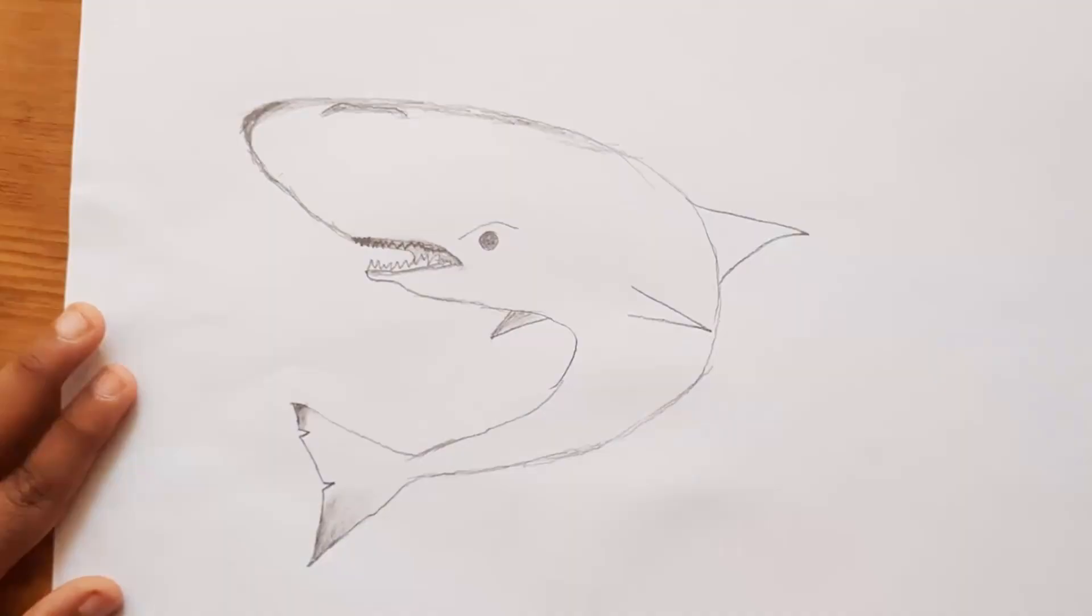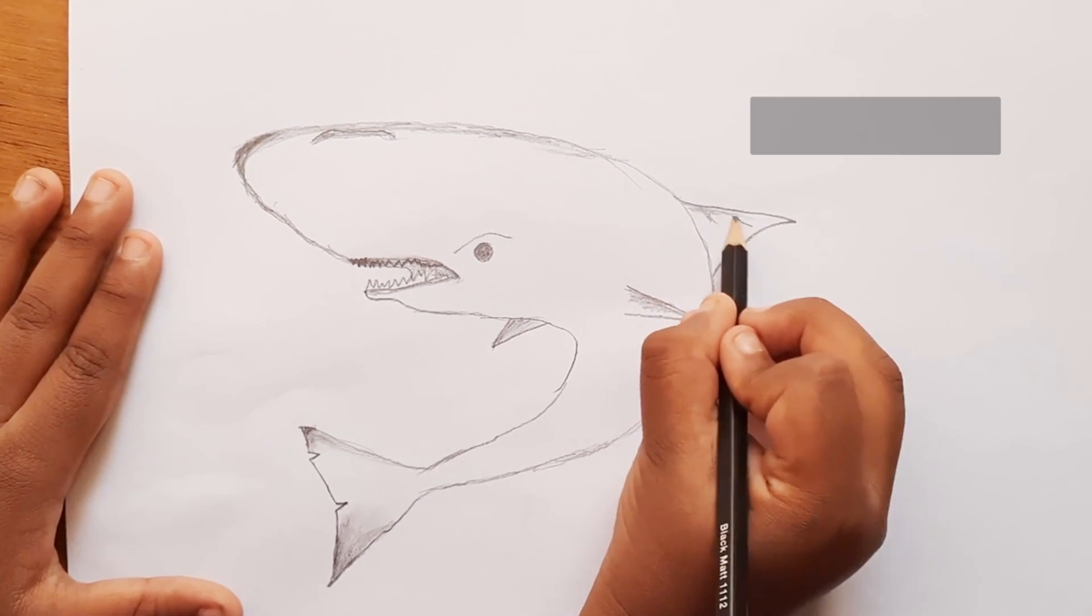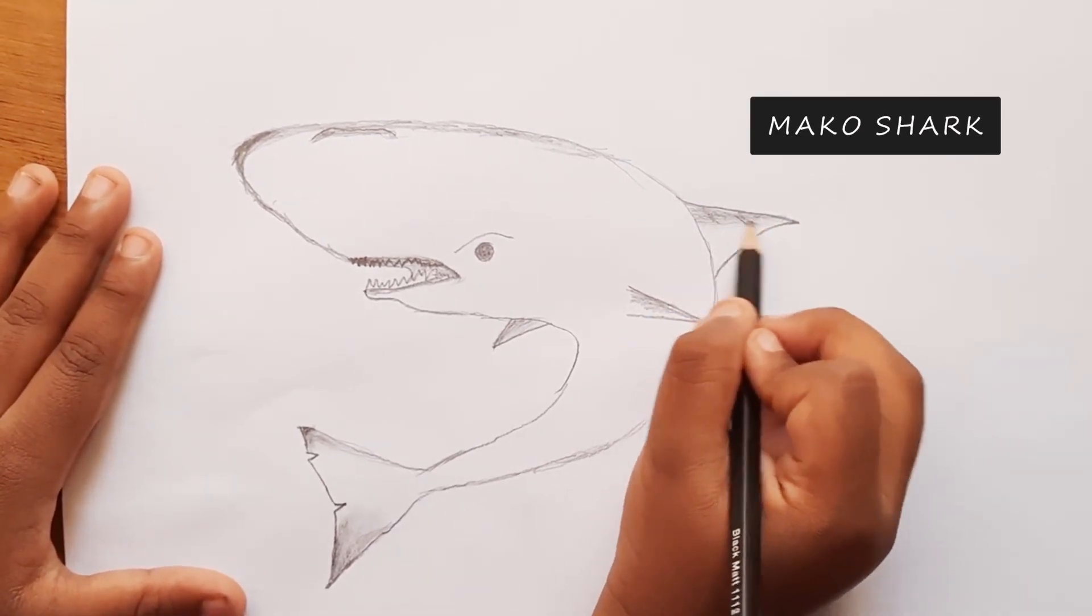We can see a mako shark in the movie Finding Nemo. The character name is Chum.